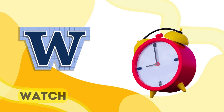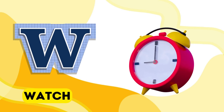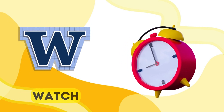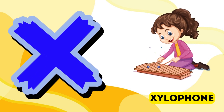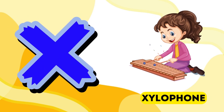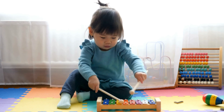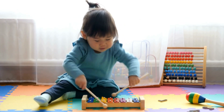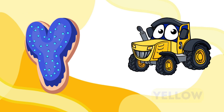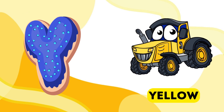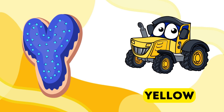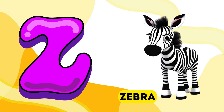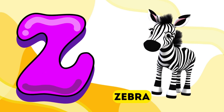W is for watch, w-w-watch. X is for xylophone, x-x-xylophone. Y is for yellow, y-y-yellow. Z is for zebra, z-z-z.